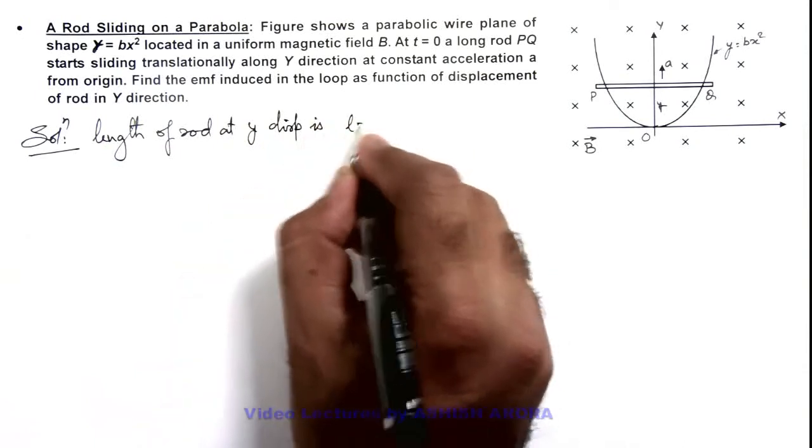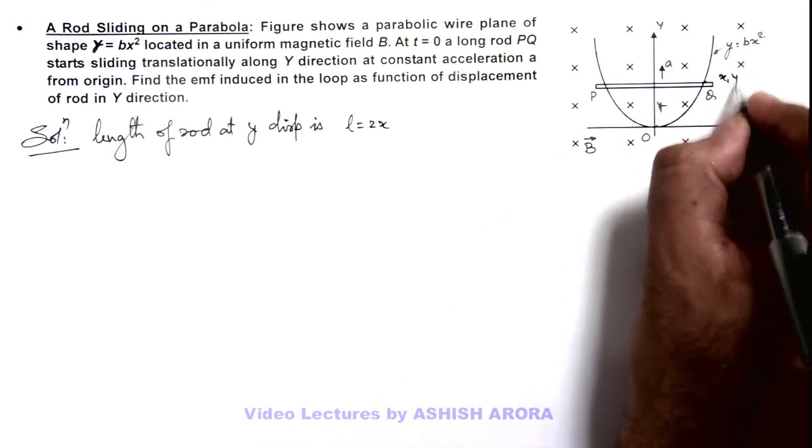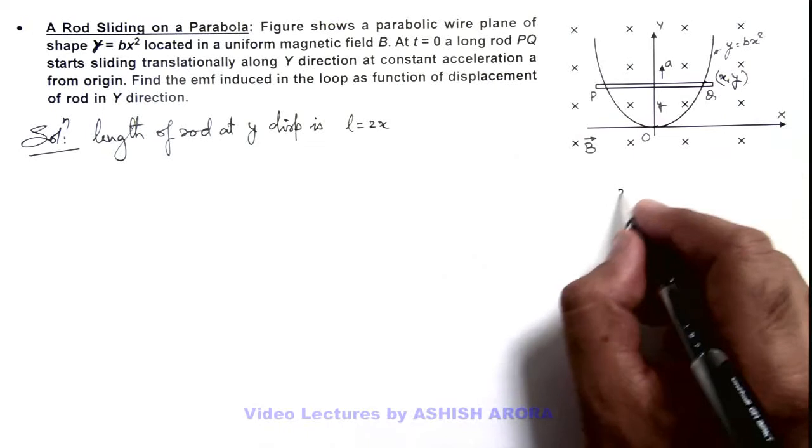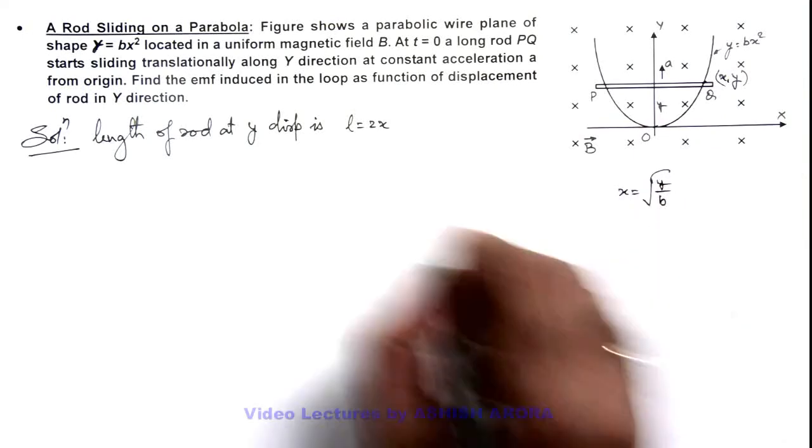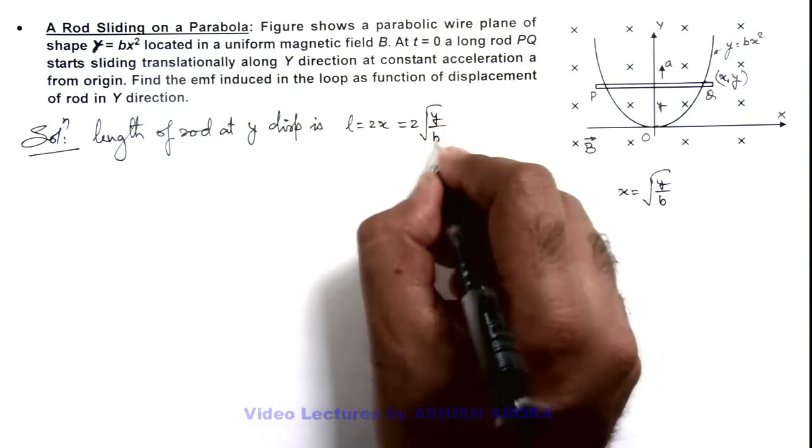The length can be written as 2x, because if this point is having a coordinate x comma y, then at a particular coordinate y the value of x can be written as root of y by b. So this can be given as twice of root of y by b. This is the length of the rod.